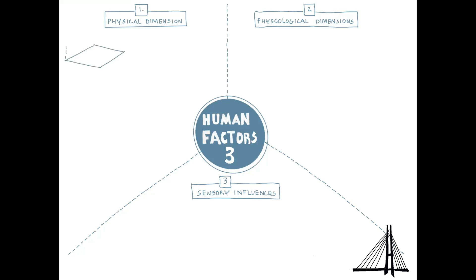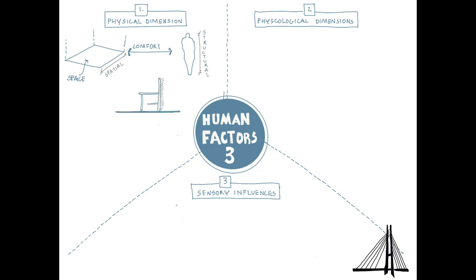The first dimension is physical dimension. The spaces of a building are designed as places for human movement, activity, and repose. There should therefore be comfort between the form and dimension of space and our own body dimension. This dimension of space is known as spatial dimension, the dimension of body is known as structural dimension, and the dimensional requirements that result from any activity we perform are functional dimensions.